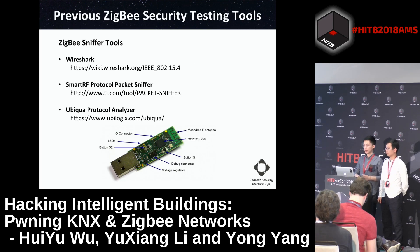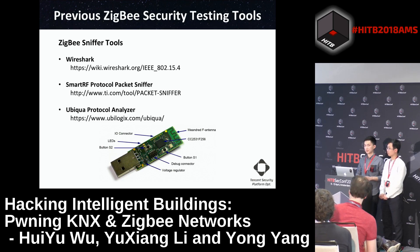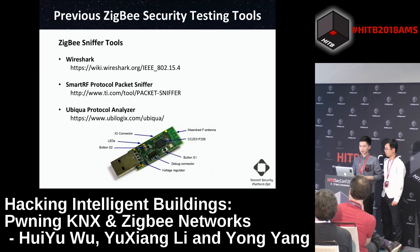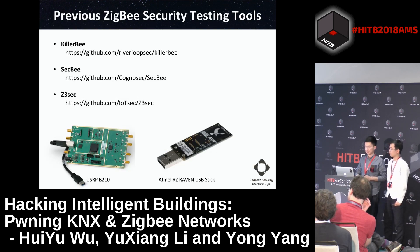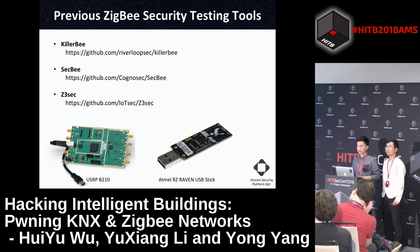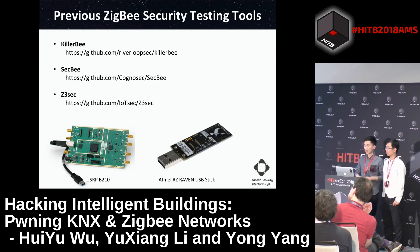If you want to capture and analyze ZigBee packets, you need to choose some hardware and software tools. We use the CC2531 USB dongle to sniff ZigBee packets. There are also sniffer software tools like Wireshark, packet sniffer, and so on. Some security researchers have developed great ZigBee security testing tools such as KillerBee, securityBee, and Z3 Security. Their hardware is all based on USRP or the RZ-Raven USB stick.